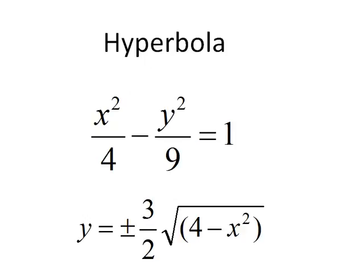Next, we graph the hyperbola. Similar to the ellipse, it's not a function, but it does have an upper half and a lower half. So we solve for y and find that y is equal to plus or minus 3 halves times the square root of the quantity x squared minus 4. The upper half is y equals 3 halves times the square root of the quantity x squared minus 4, and the lower half is minus 3 halves times that same square root.